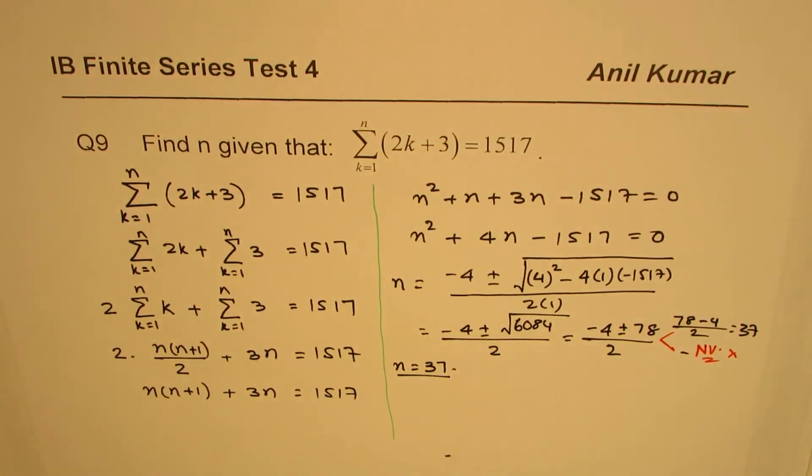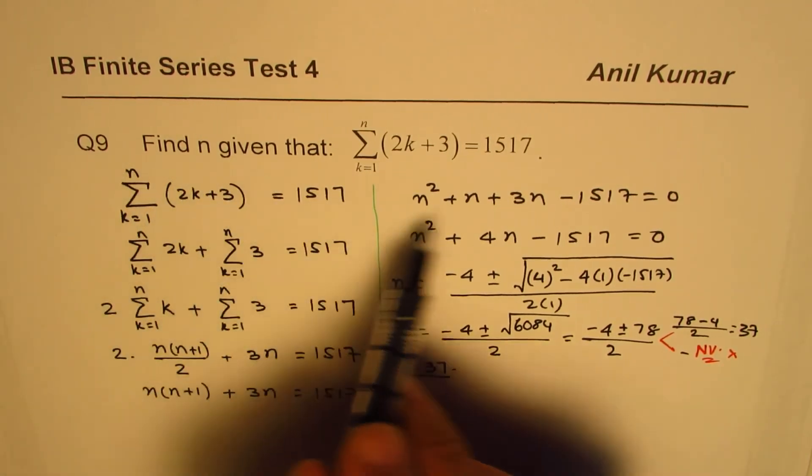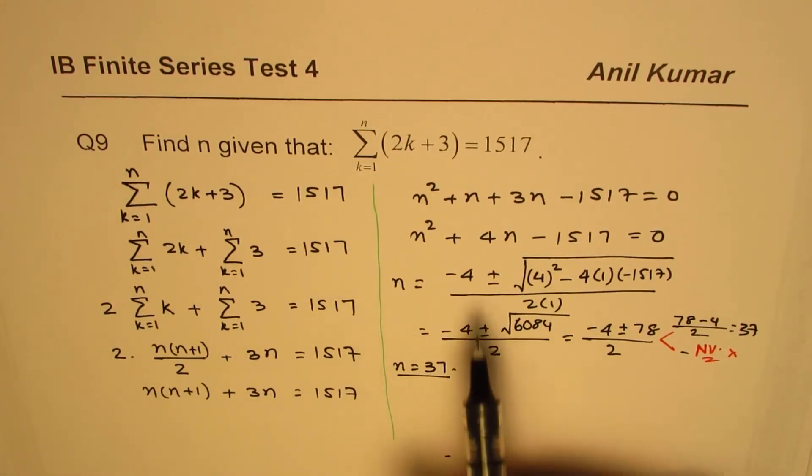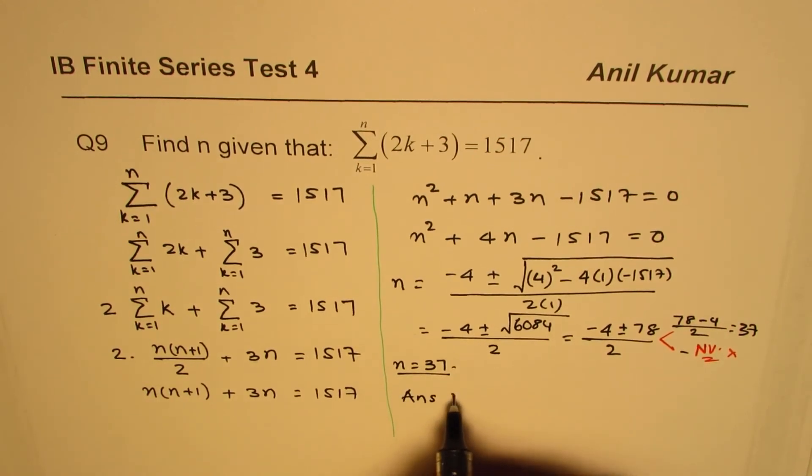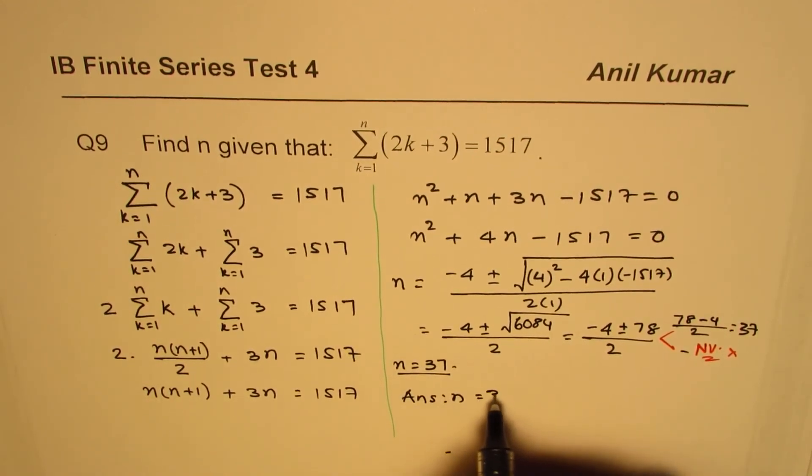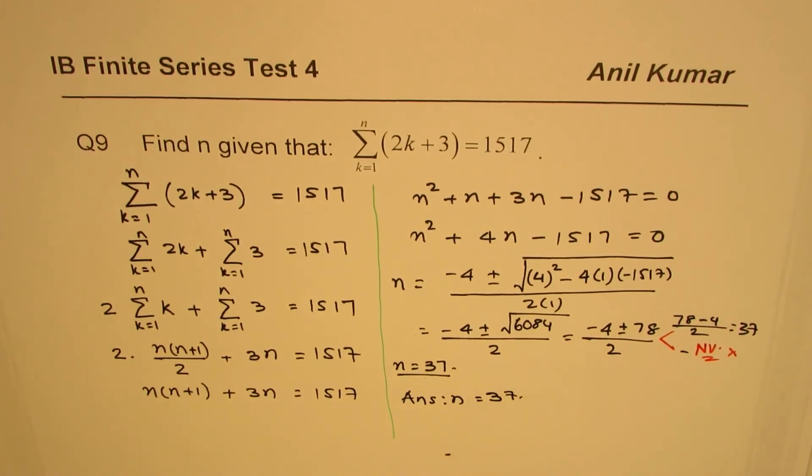So n equals to 37 is what we get here. I hope the steps are very clear. So find n given that this sum is 1517. So our answer is n equals to 37. So we have used two formulas here.